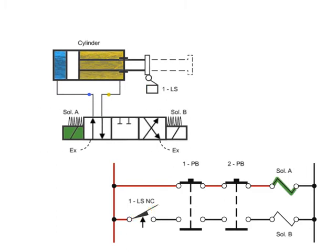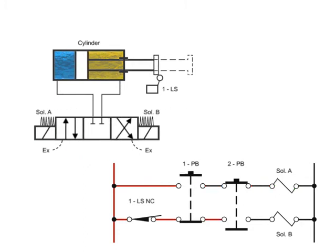When the cylinder begins to move forward, limit switch 1 is released and goes to its normally closed position. If either button is released, both solenoids de-energize and the springs return the valve to its neutral center position, stopping the movement of the cylinder.